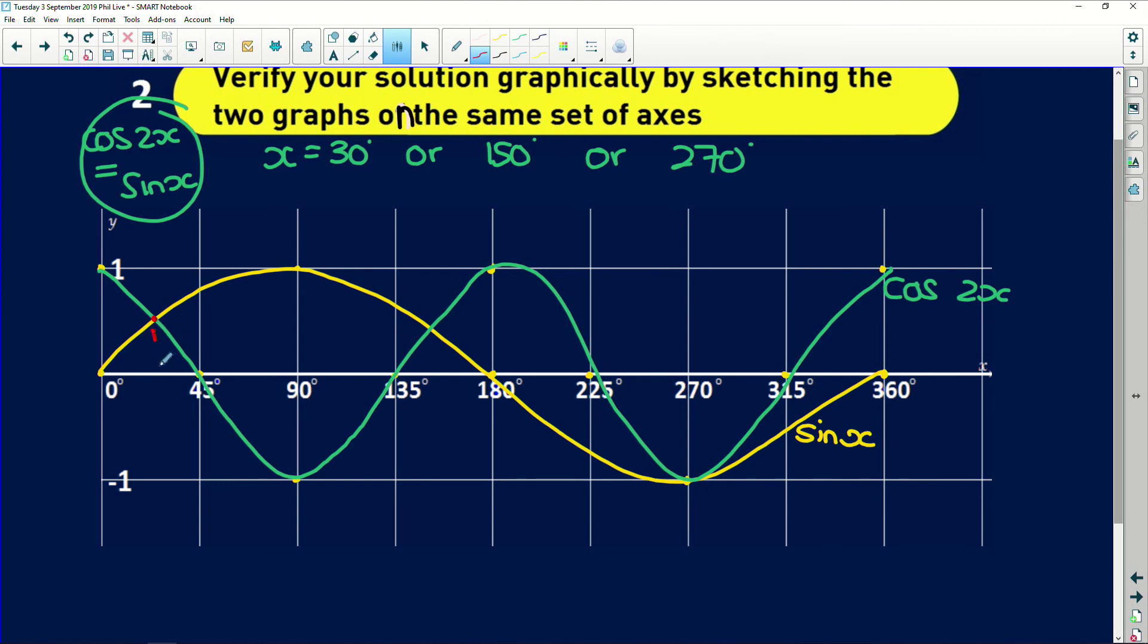So here we found where the graph of cos of 2x intersects with sine of x. So let's indicate those points on the graph. Here we have an intersection which will correspond with 30 degrees. Here we have another intersection which would correspond with 150 degrees. And lastly we have this intersection which is 270 degrees. And those are our three solutions that we found. So points of intersection are what we have solved for in this question.